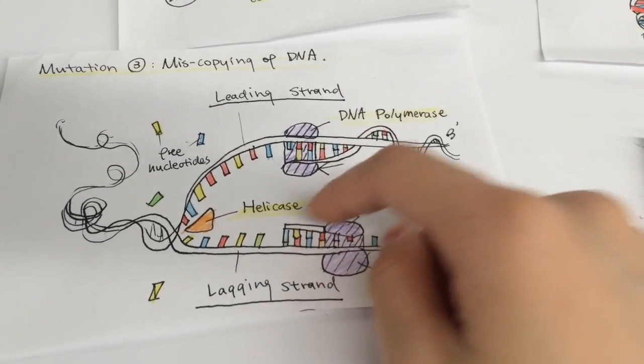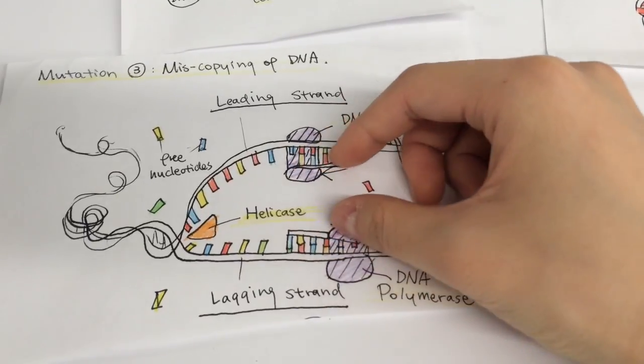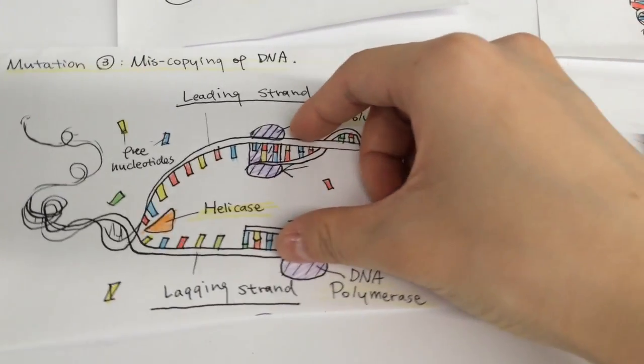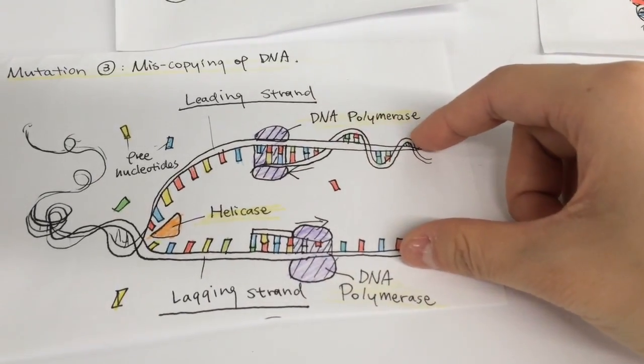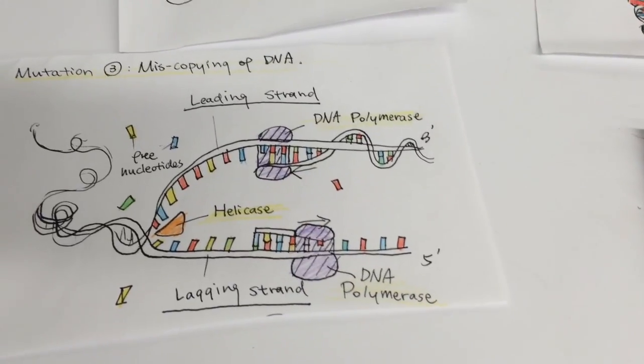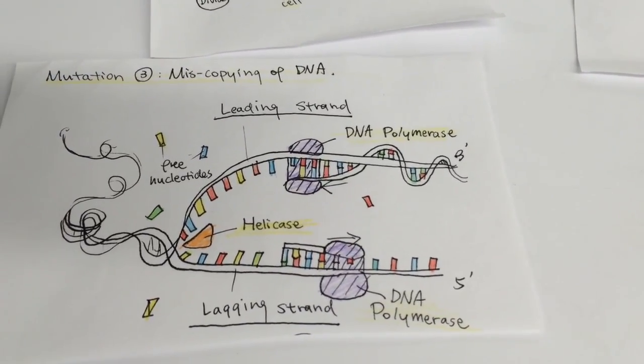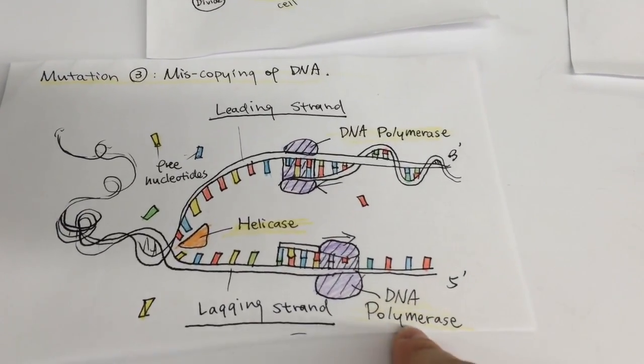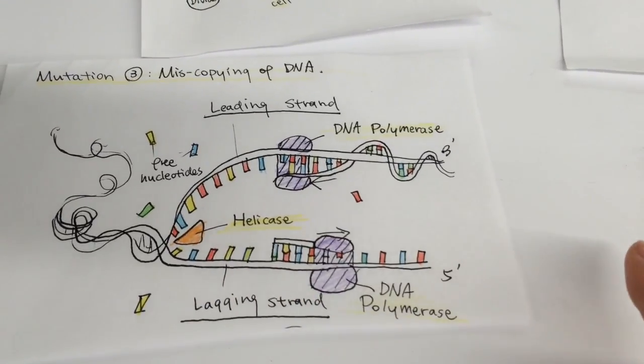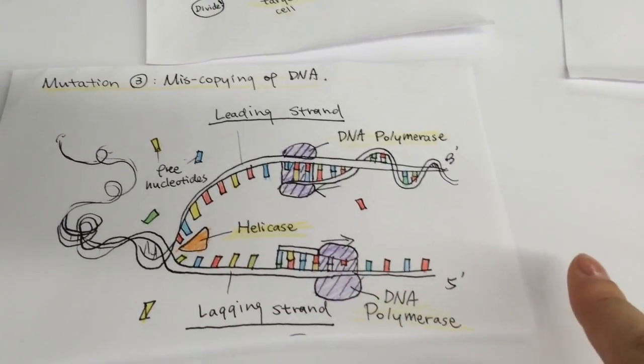When the two new strands are completely produced, the original double helix DNA has successfully copied itself and split into two. It is important to note that DNA polymerase adds 50 nucleotides every second, which is a really fast rate.